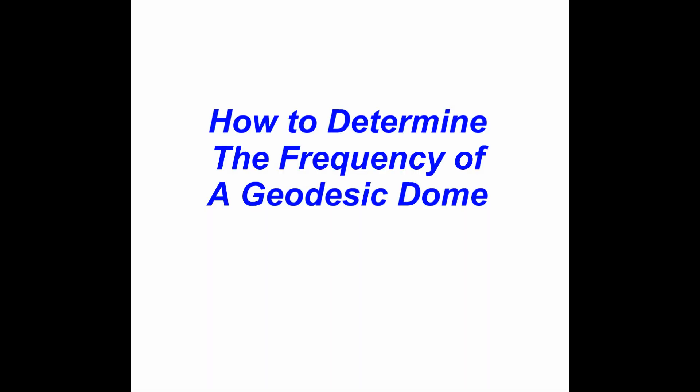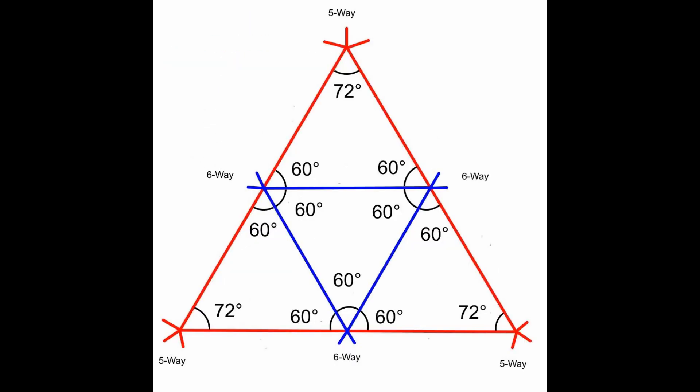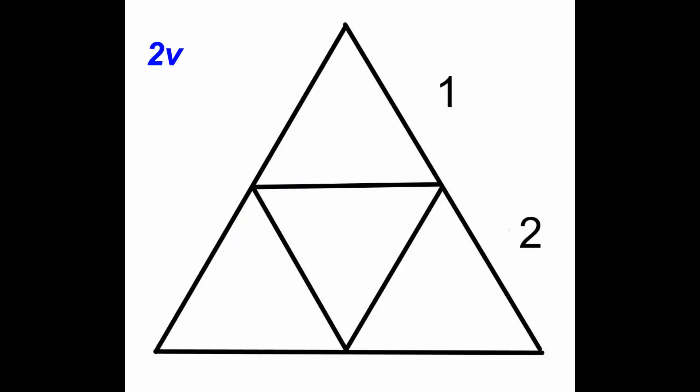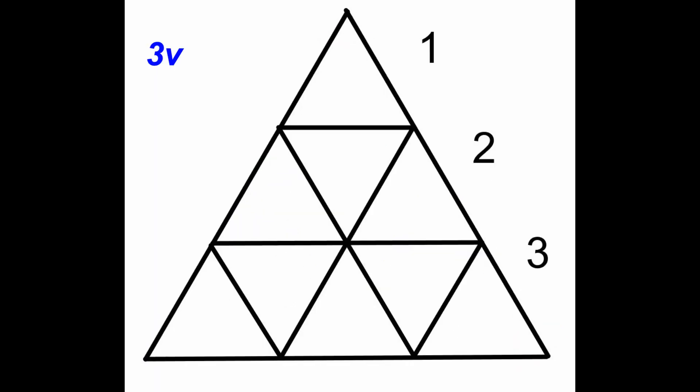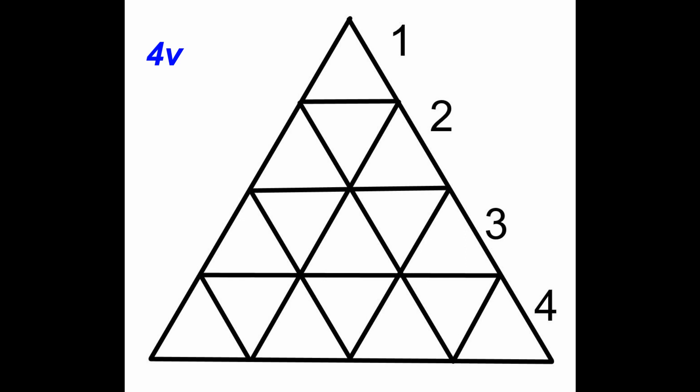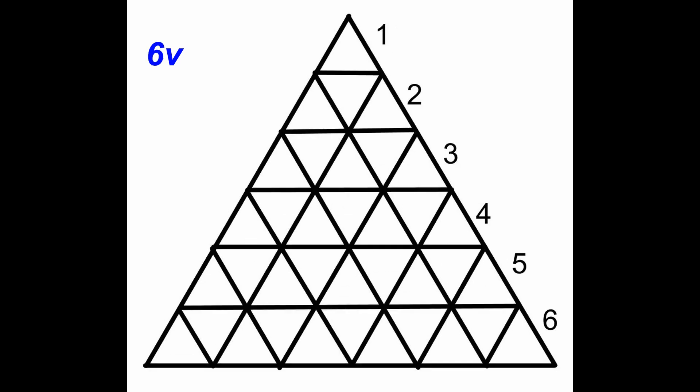How to determine the frequency of a geodesic dome: every geodesic dome, no matter what size or frequency, only has 6 of these 5-way connectors — all other connections are 6-way connections. The 6 five-way connections represent the corners of one face of the original icosahedron, and the struts between each of these 5-way connections are the tessellated edges of the icosahedron face. By counting the struts between 2 of the 5-way connections in a geodesic dome, you can determine the frequency of any geodesic dome.